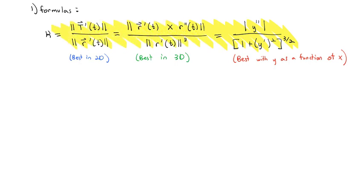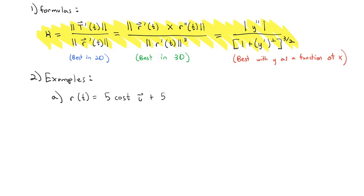These three equations are going to be really key to this section. Let's say we have the function r(t) = 5cos(t)i + 5sin(t)j. Since we're just working with i and j, we have a vector-valued function in the plane — two dimensions. So we're going to use that first equation: the magnitude of the derivative of the unit tangent vector divided by the magnitude of the derivative of the vector-valued function.